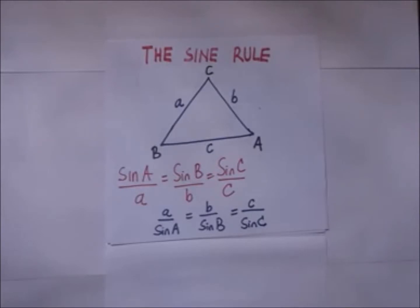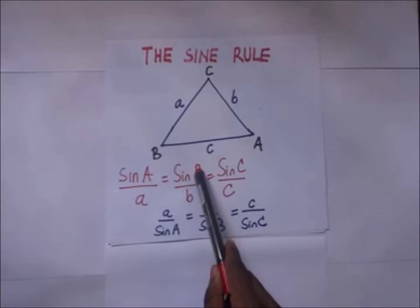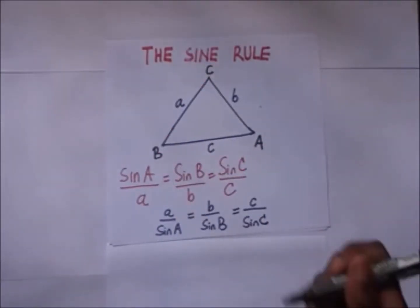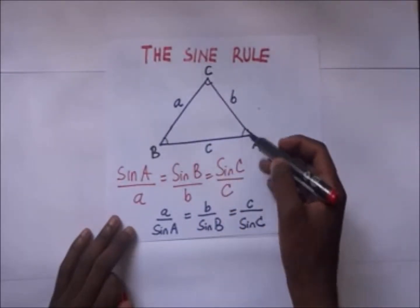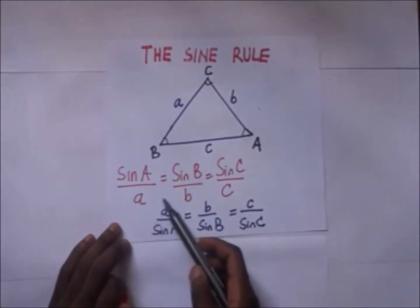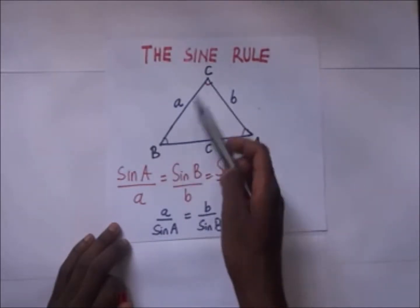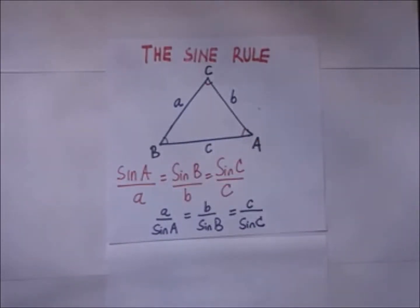Now the sine rule is simply as stated on your screen: sin A over a equals sin B over b equals sin C over c. These capital letters A, B, and C are representing these angles, and these small letters a, b, c are representing the sides. The sine rule is mostly used to find missing angles and missing sides for triangles that are not right-angled.